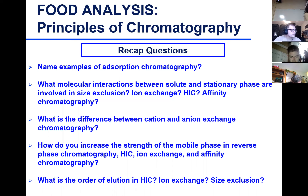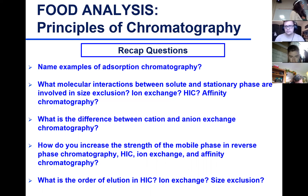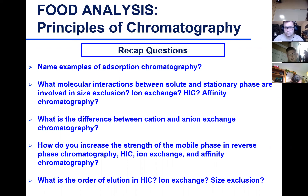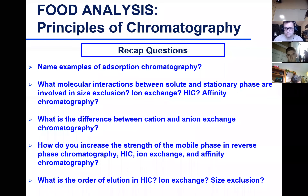In reverse phase, you start with a polar mobile phase and your stationary phase is non-polar. To enhance the strength of the mobile phase, you increase the organic solvent — you make it less polar. The compounds interacting with the column via non-polar interactions will then prefer the mobile phase and elute with it.